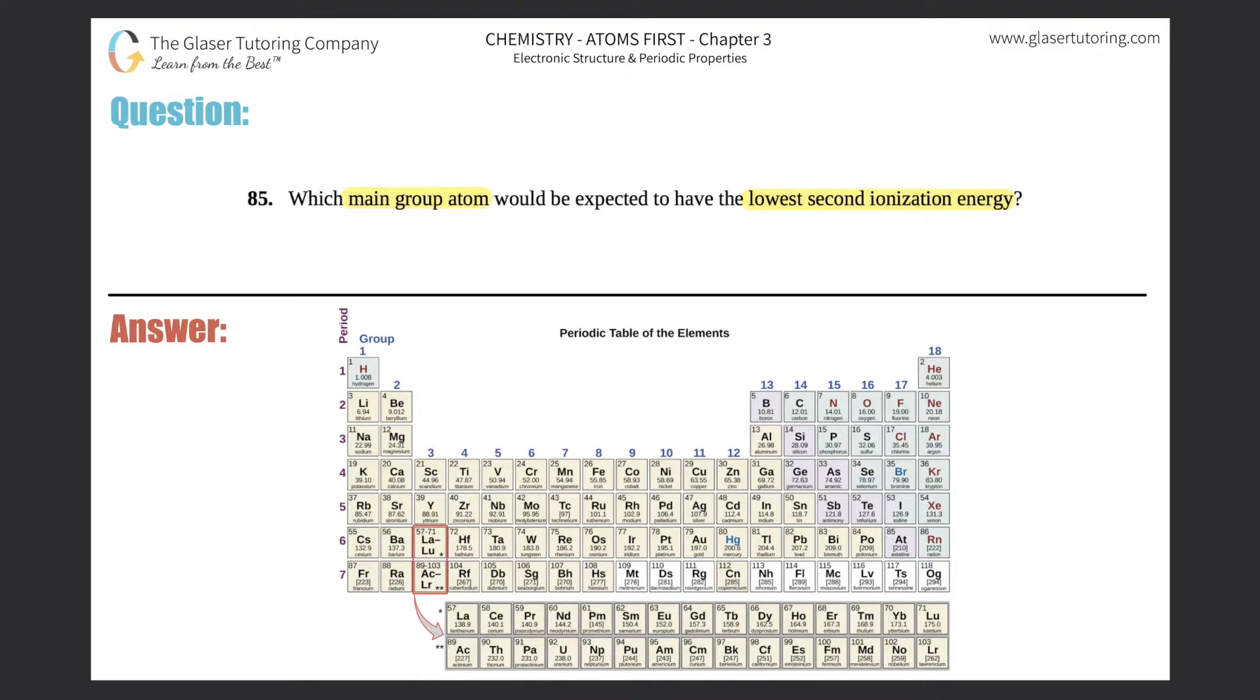They say which main group. Main groups are groups 1 and 2, and then you skip the transition metals, so you go from 13 all the way to 18. This is also known as 3A all the way to 8A.